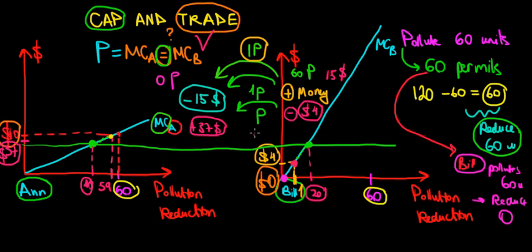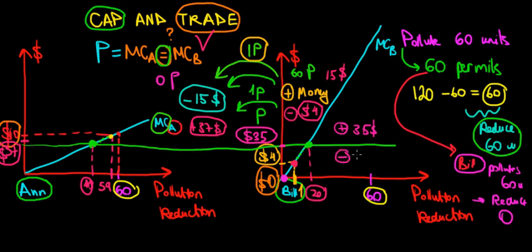If the permit price at which they stop trading is $35, then Bill gains $35 from selling the permit but also incurs an additional $35 cost of reducing pollution — since marginal cost equals the permit price at equilibrium. The gain and loss cancel out, making it an indifference point. This is the equilibrium where the permit price equals the marginal costs of both players.